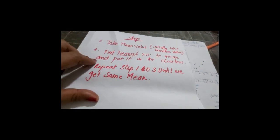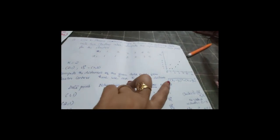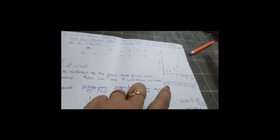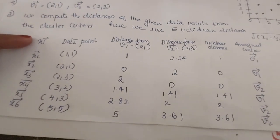Next, we find the nearest data point to each mean and put it in the corresponding cluster. For that, we compute the distance of each given point from the cluster centers v1 and v2 using Euclidean distance. The Euclidean distance formula is: root of (x1 minus y1) squared plus (x2 minus y2) squared. With this, we start drawing a table.